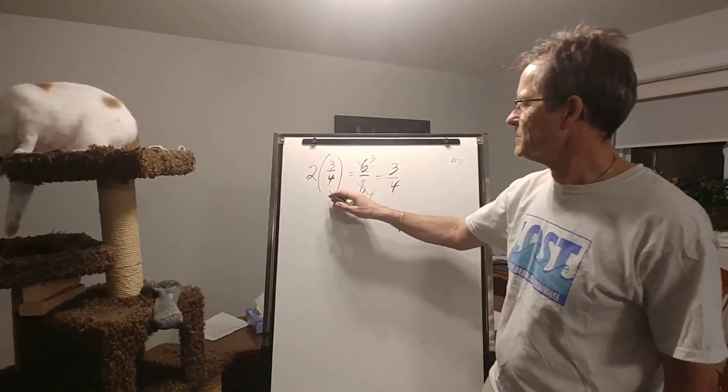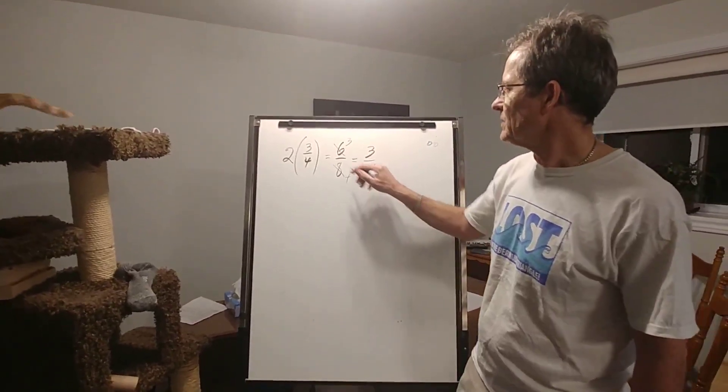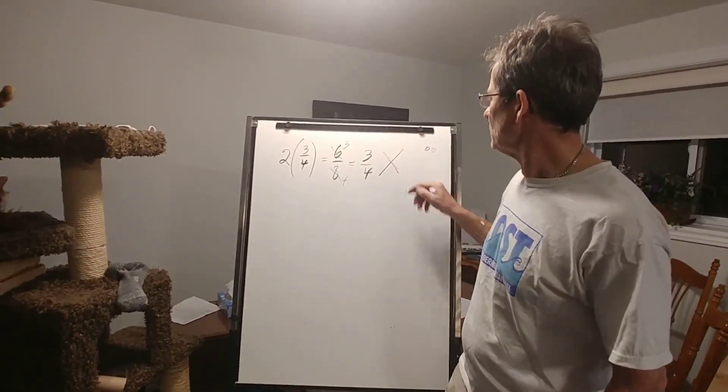But how can two times three quarters also be three quarters? That's not possible. So this is wrong. That's not what you want to do.